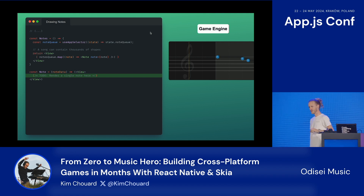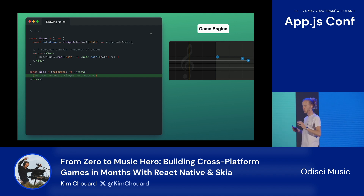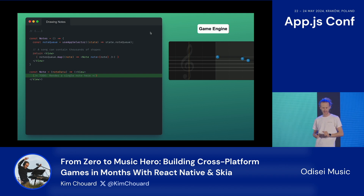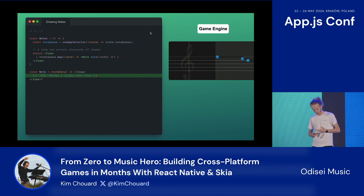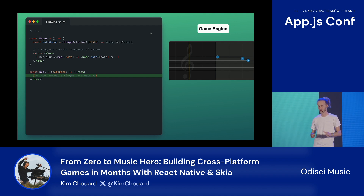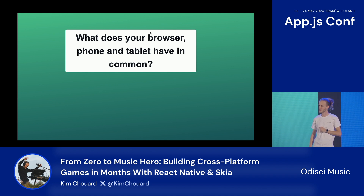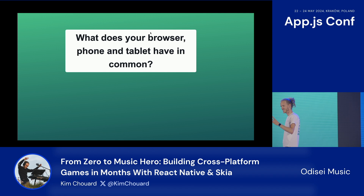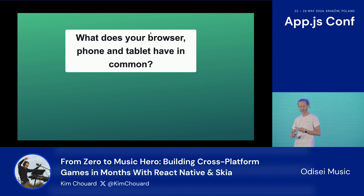Now that we've got our animation right and things are moving in the right order, let's figure out what we're moving — the notes. It's basically just a circle with a rounded rectangle. We could use a simple view, but it's going to introduce some layout complexity that's a bit unnecessary for us. To fix this and to be as performant as possible, the answer lies in this question: what does your browser, phone, and tablet have in common?